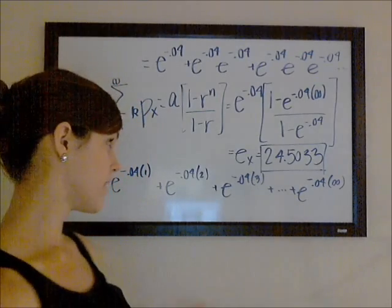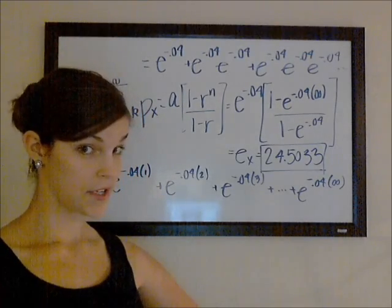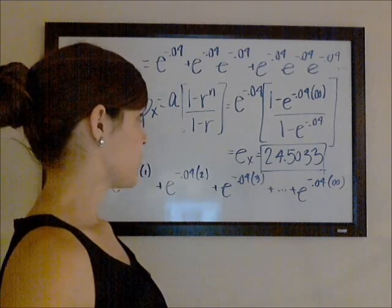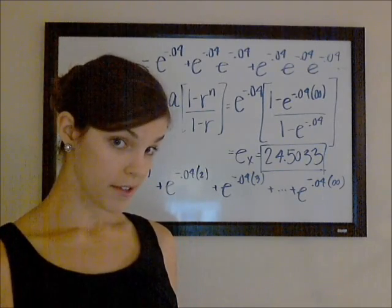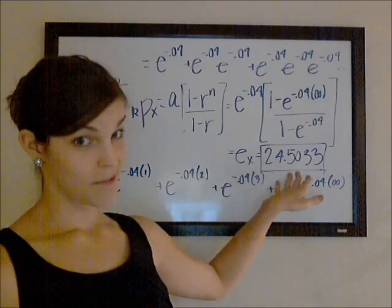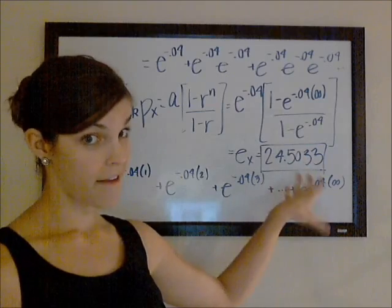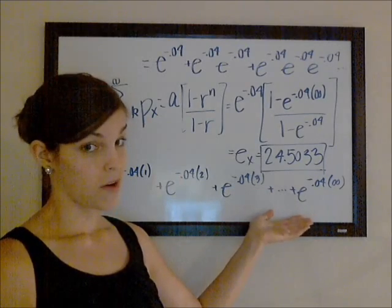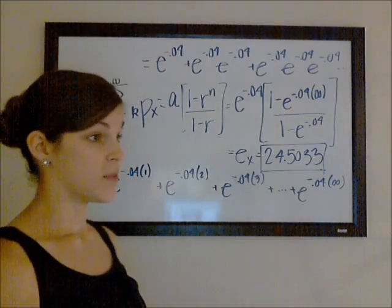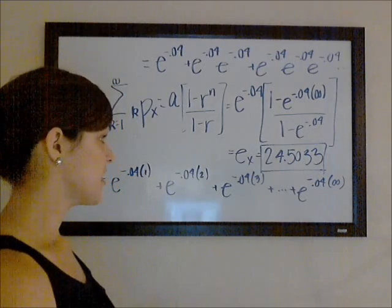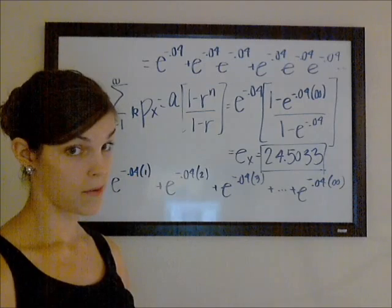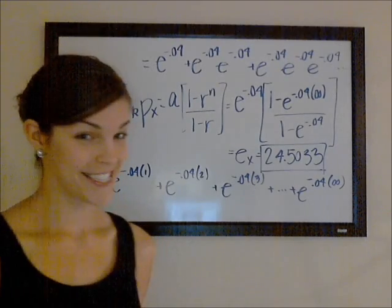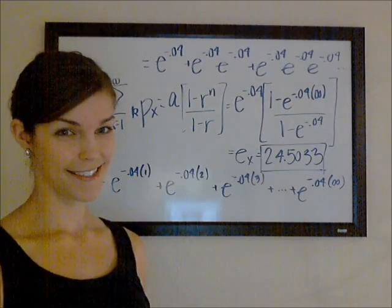So there are a couple of neat things to think about here and make sure you understand. Even though this is the curtate expected future lifetime for x, which indicates that we're looking at complete years, this does not have to be a whole number. This doesn't have to be like 24 or 25. And think about that. The reason for that is that we're looking at an average number of complete years. So once you look at all these different possible complete years, and you take the expected value, or you average those out, you take into account the probabilities, of course it's not going to be a whole number. So that's fine.